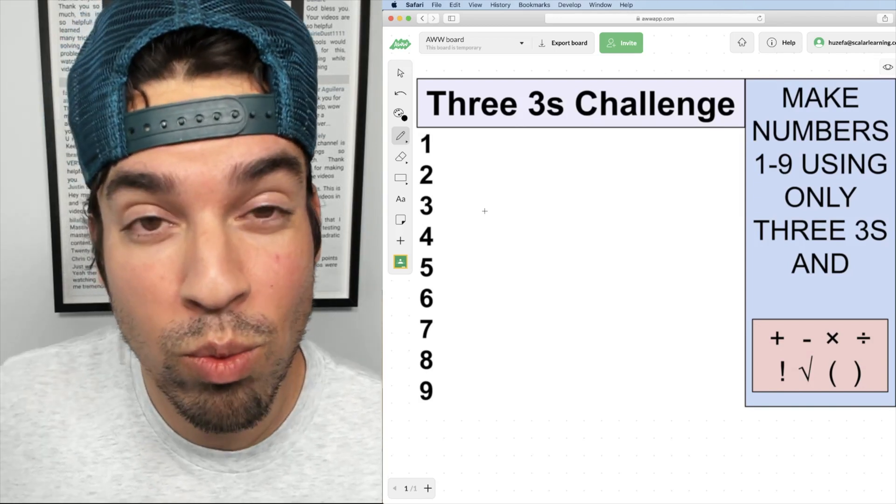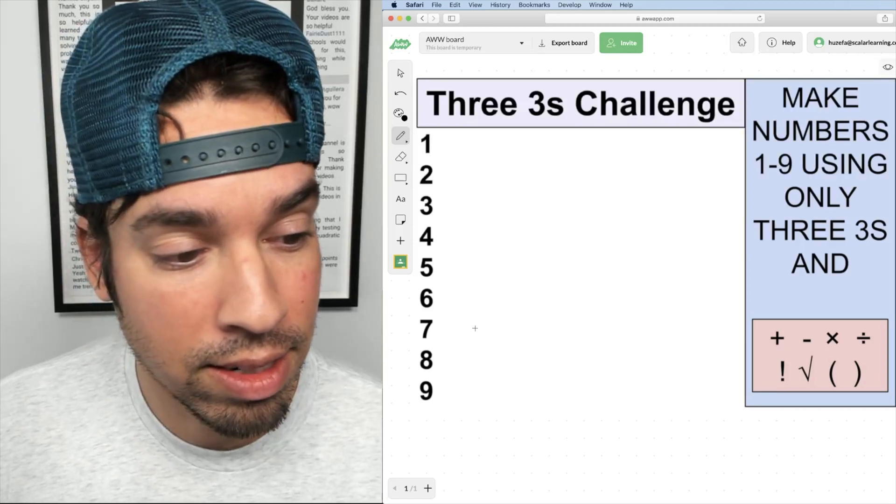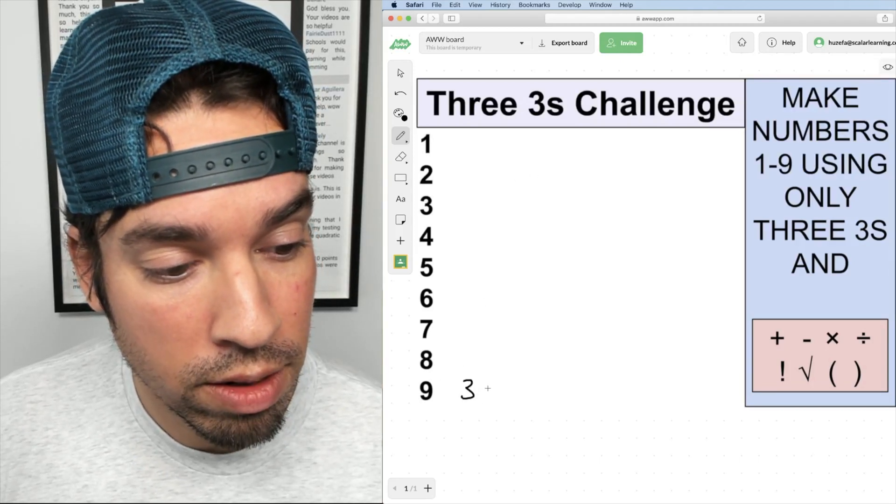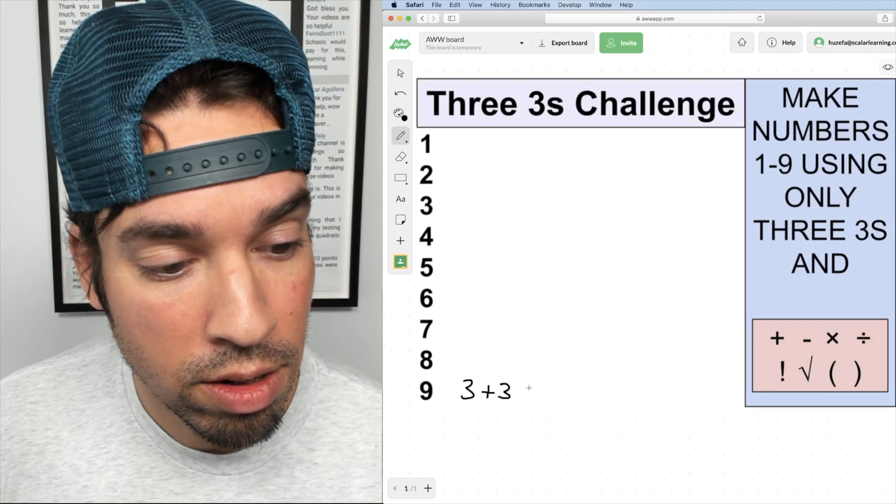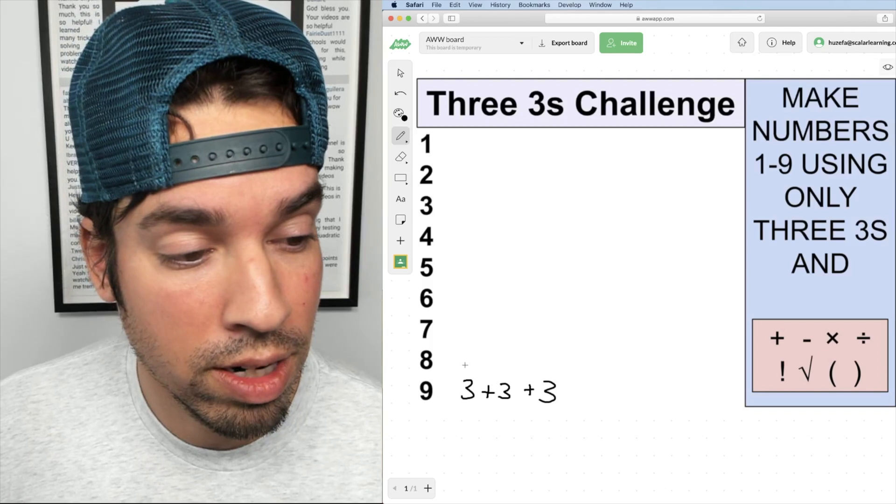First I'm going to start with the one that I perceive as easiest, meaning the one where the solution just pops in my head, and that's nine. Nine is quite straightforward because I can just do three plus three plus three and that gives me my solution for nine.